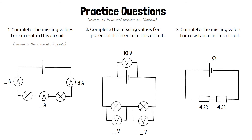The first thing to note is that current is the same at all points in a series circuit. So if the first ammeter reads three amps, the current at all the other ammeters will also be three amps.